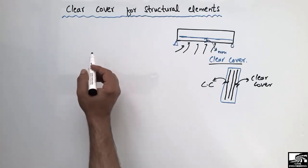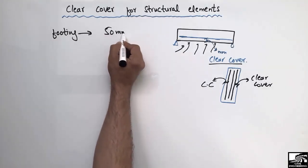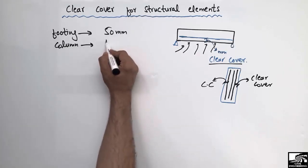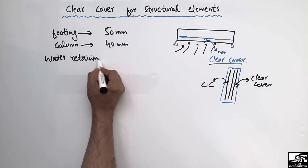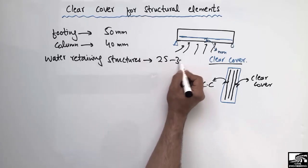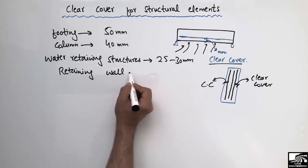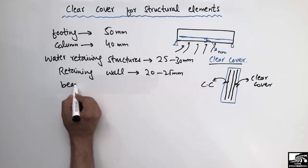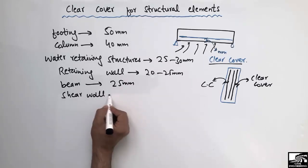The maximum clear cover is provided for the footing, which is generally 50 millimeters — the highest value among all elements. For columns, it is 40 millimeters. For water retaining structures, the clear cover is 25 to 30 millimeters. For retaining walls, it is 20 to 25 millimeters. For beams, the clear cover is 25 millimeters, and for shear walls it is also 25 millimeters.